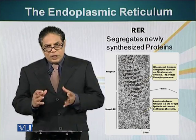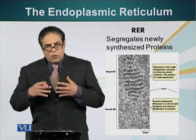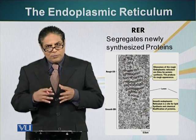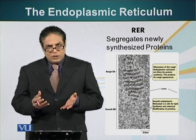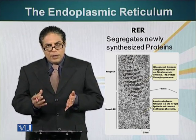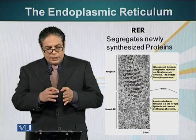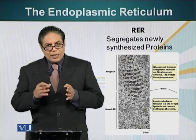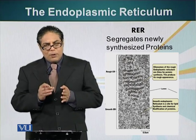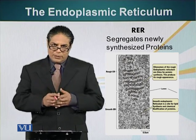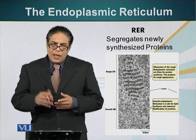Rough endoplasmic reticulum is called rough endoplasmic reticulum because when people first observed it under the microscope, it seemed very rough. It seemed very rough because the ribosomes are attached to the rough endoplasmic reticulum.